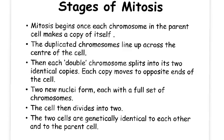To recap: mitosis begins once each chromosome in the parent cell has made a copy of itself. The duplicated chromosomes line up across the centre of the cell. Then each double chromosome splits into two identical copies, and each copy moves to opposite ends of the cell. Two new nuclei form, each with a full set of chromosomes, and the cell then divides in two. The two cells are genetically identical to each other and to the parent cell that they came from.